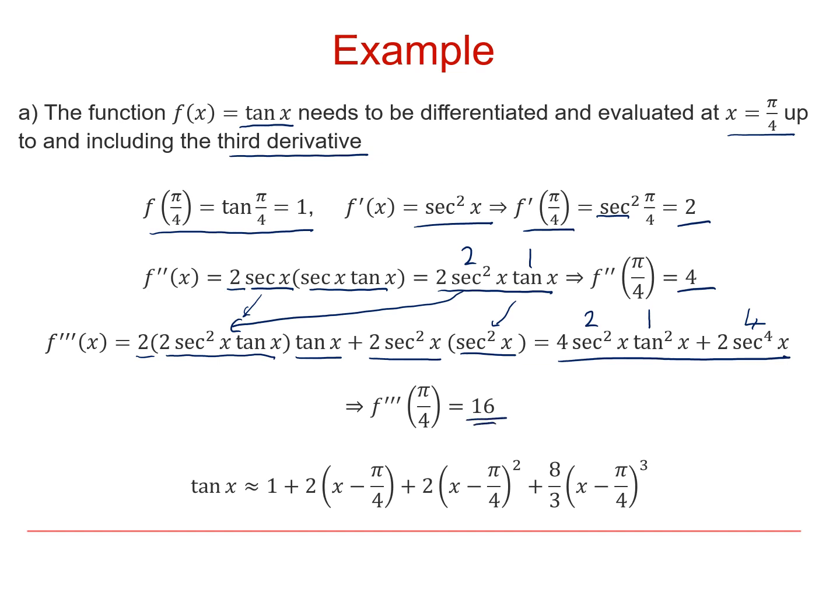Then we substitute those values into our series expansion. We've got 1 for the function at π over 4. The derivative of the function at π over 4 was 2. We multiply that by x minus π over 4. And the second derivative at π over 4 was 4. But this one we have to divide by 2 factorial. So 4 divided by 2 factorial gives us 2.